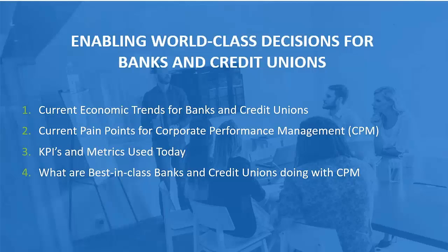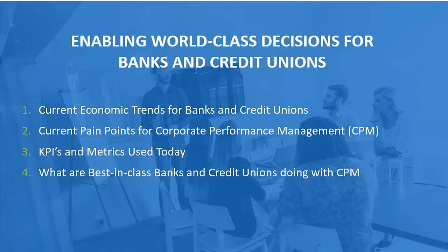There are four basic parts to this presentation. First, what are the current economic trends for banks and credit unions? Then, what are the current pain points? To make dollars and cents out of your data, you have to have some type of measurement system — a BI solution. We'll talk about corporate performance management and the pain points to get one set up. Next, what are some of the KPIs and metrics banks use today for corporate performance management? And last, what are the best-of-breed doing in the marketplace? We'll wrap up with a quick video and polling questions.